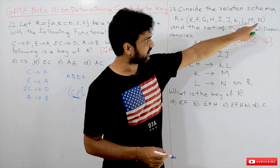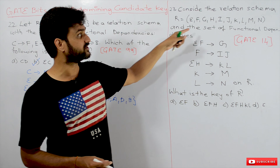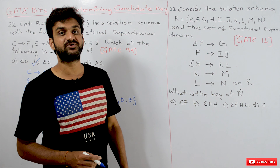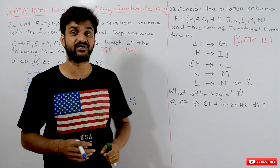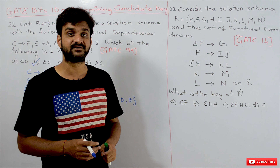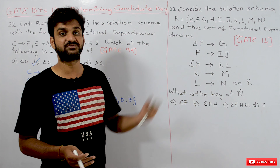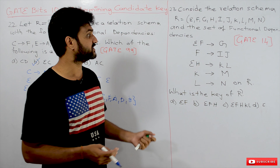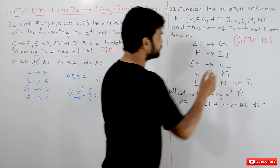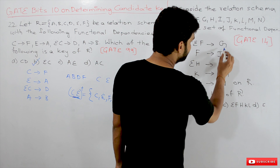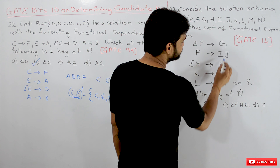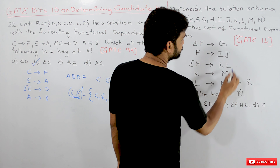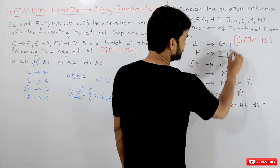Similarly, the second problem can also be solved in the same way. Is it possible to find all the combinations with these many attributes in just two to three minutes? No. So again, we find what attributes are not there on the right-hand side.